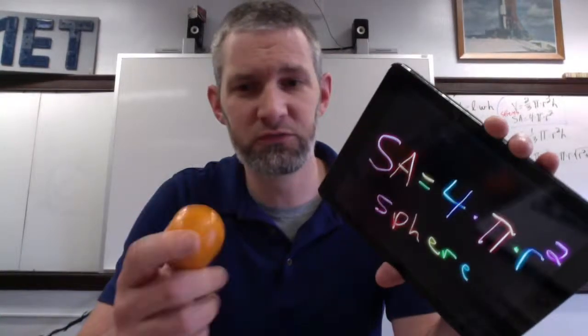But the surface area of a sphere is one of those odd formulas because we don't have a good way to unfold or unwrap a sphere. These projections of maps of the Earth kind of prove that.